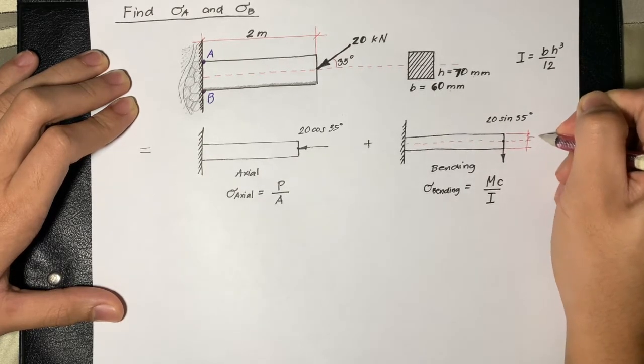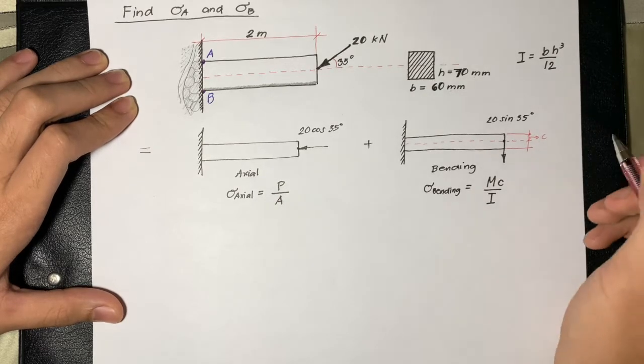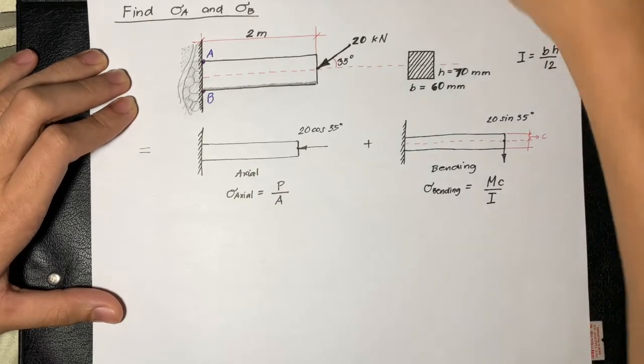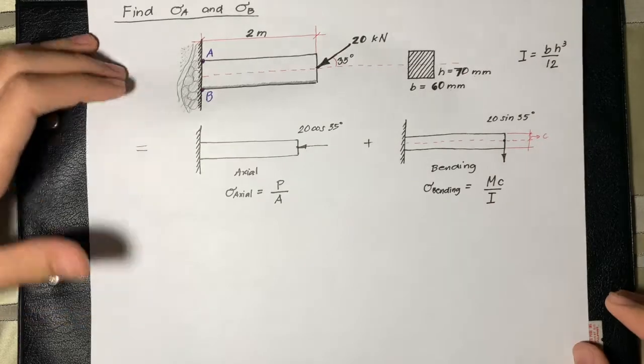Here we have 70 mm, so the C in this problem is 35 mm.